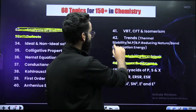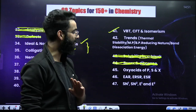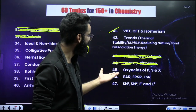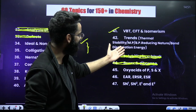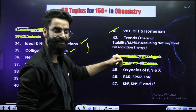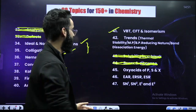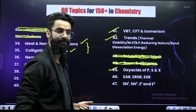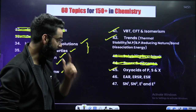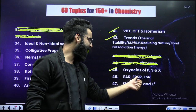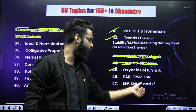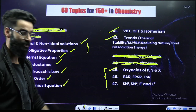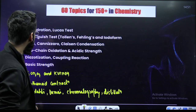When it comes to Coordination Chemistry: VBT, CFT, isomerism — the most important ones. Do remember these trends as well: thermal stability, melting point, boiling point, bond dissociation energy — these trends are important. Oxy acids of phosphorus, sulfur and halogens — do them. EAR, ERSR, ESR, SN1, SN2, even E2 — this involves your reactions part, do them on priority.